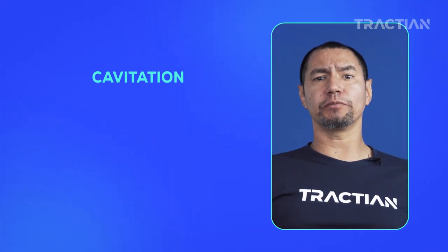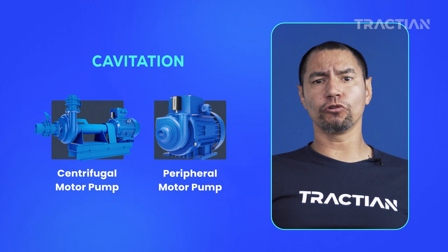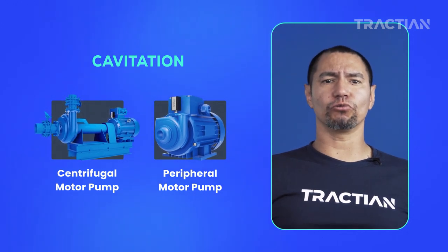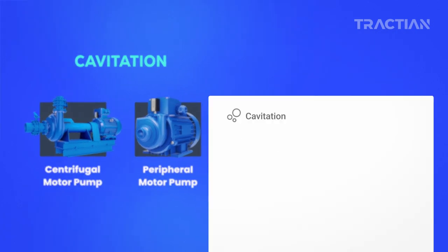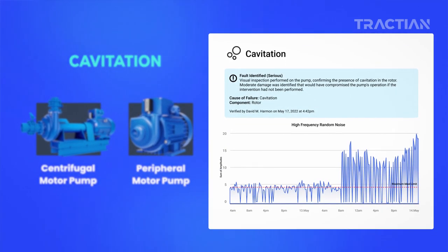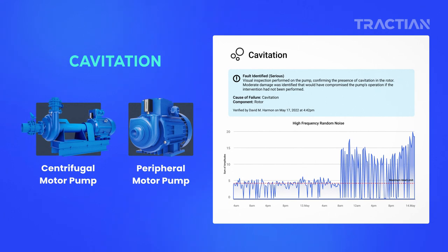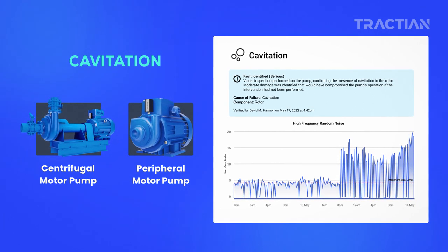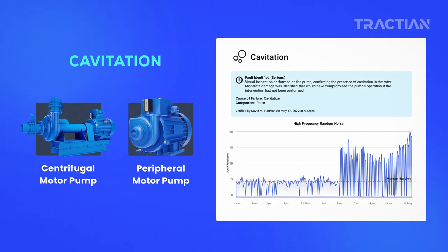Cavitation problems can be detected in motor pumps and other types — centrifugal, peripheral, etc. Explained broadly, cavitation occurs when air bubbles passing through the blades implode inside the pump. These imploded bubbles affect the efficiency of the fluid transport and also generate physical damage inside the pump, such as deformation of the blades and pump walls.